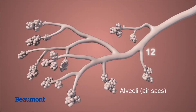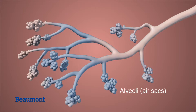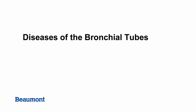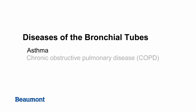When all the bronchial tubes are open, the air flows freely. Unfortunately, the tree is not always healthy. The bronchial tubes can be affected by several diseases, including asthma and chronic obstructive pulmonary disease, or COPD.